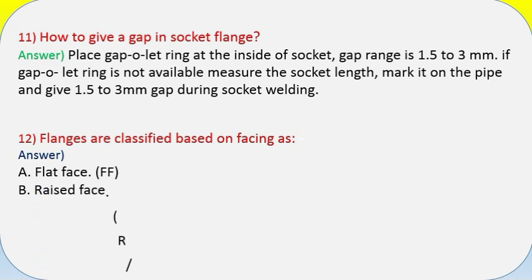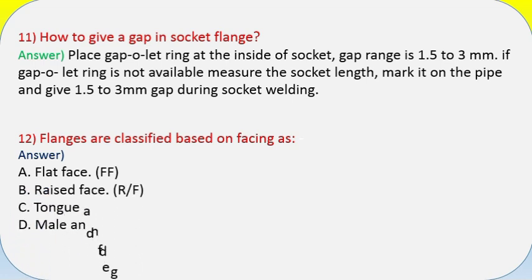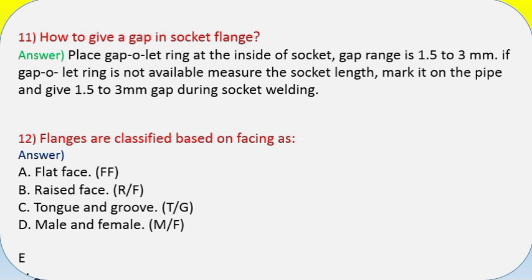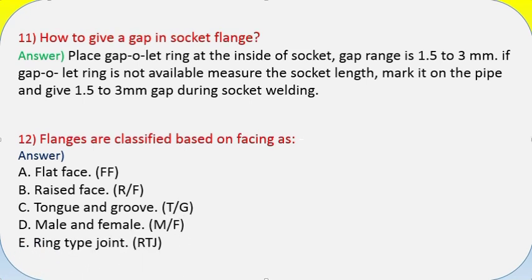Question 12: Flanges are classified based on facing as: A — Flat Face (FF), B — Raised Face (R/F), C — Tongue and Groove (T/G), D — Male and Female (M/F), E — Ring Type Joint (RTJ).